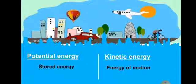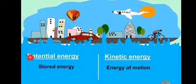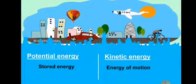Today we will talk about two kinds of energy: potential energy and kinetic energy. Potential energy is stored energy — for example, when you are sitting doing nothing, your energy is stored in your body. Kinetic energy is the opposite: it is the energy of motion.